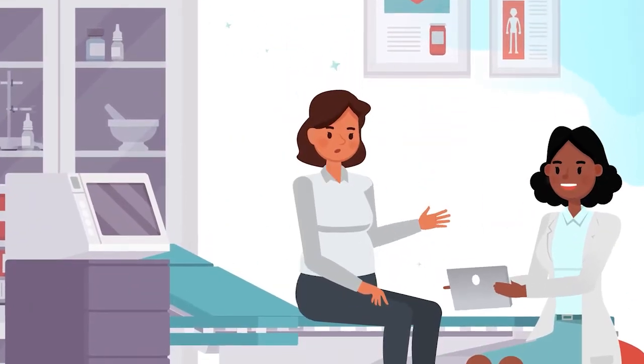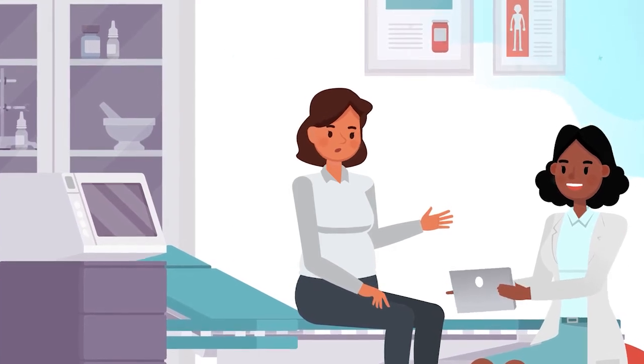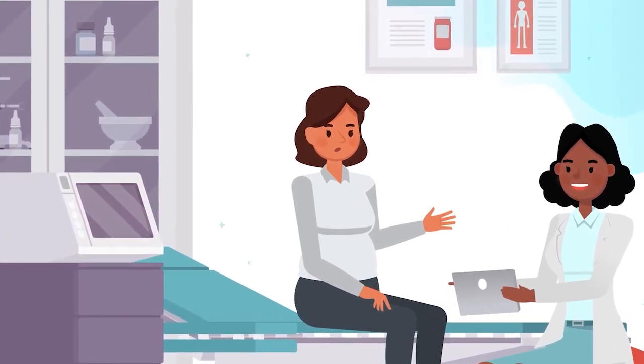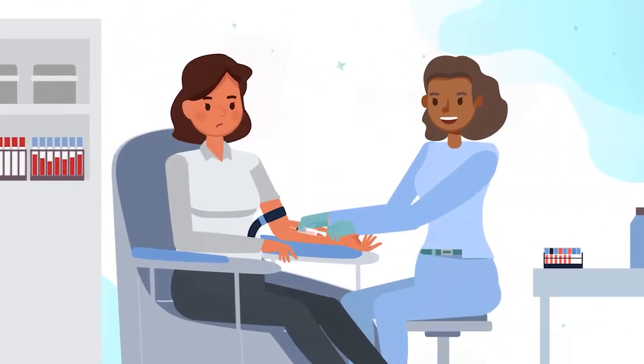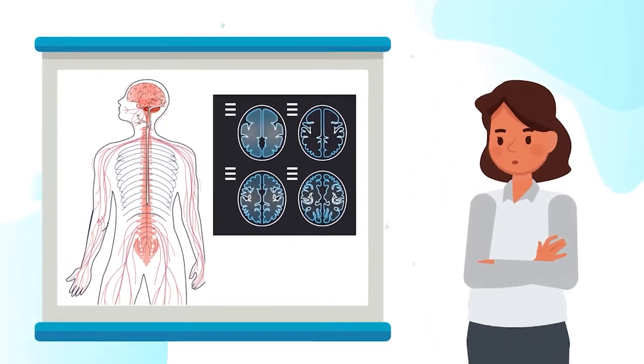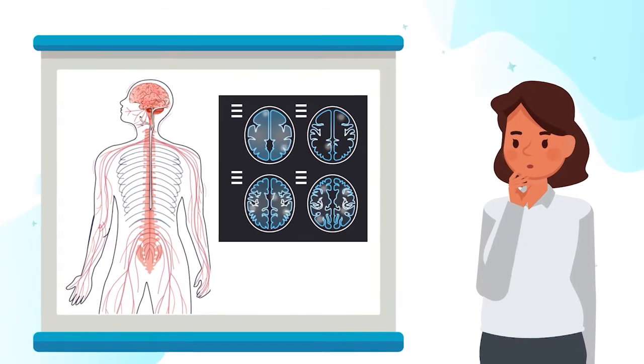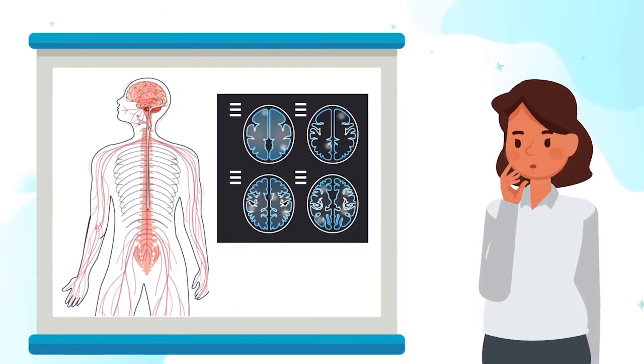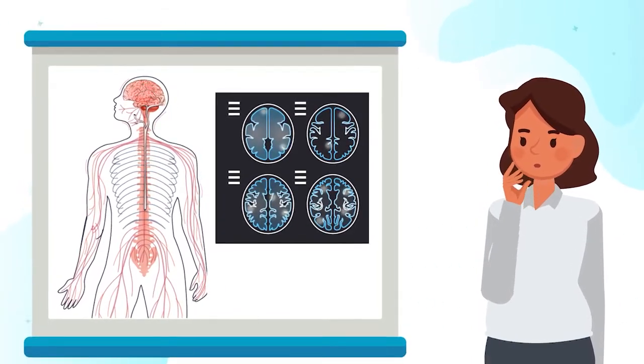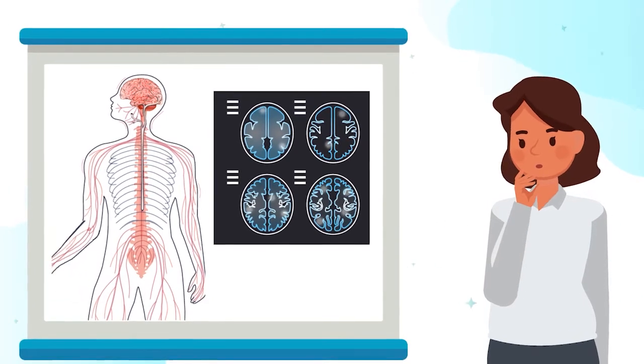If you're being evaluated for MS, expect to provide a medical history, undergo a neurologic exam, and have some blood tests done. The scarring and inflammation on your brain and spinal cord can be seen on MRI scans. The areas often, but not always, match the symptoms you're having.